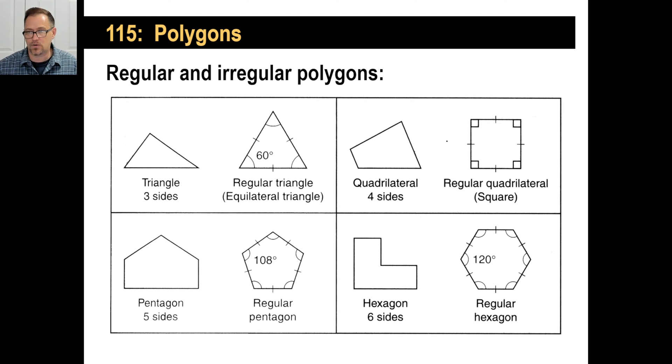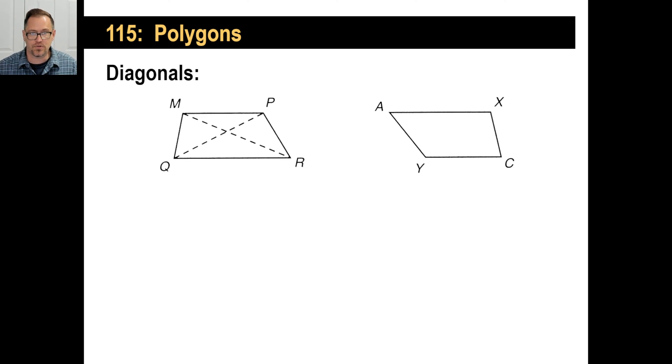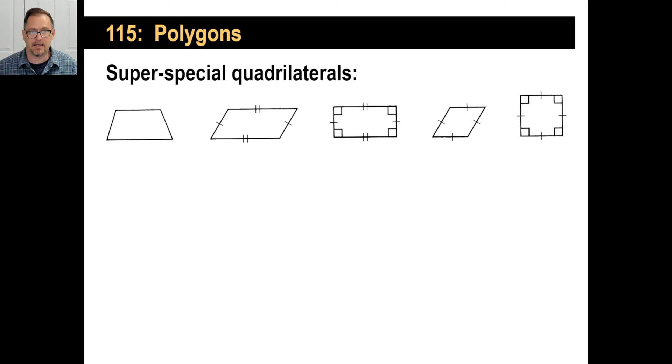There's a quadrilateral. There's a regular quadrilateral - that is a square because it's an example of a regular quadrilateral. We'll talk more about that in a second. There's a pentagon and a regular pentagon, hexagon and a regular hexagon, and so on. Diagonals are just those things that you draw from a vertex to vertex inside of a polygon.